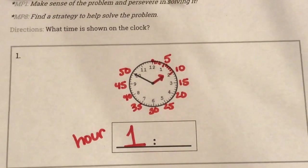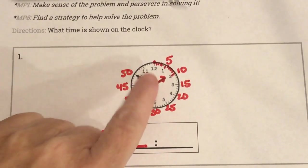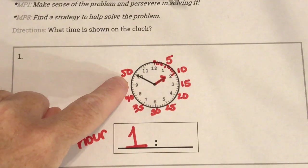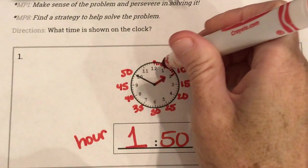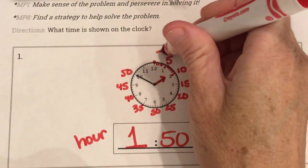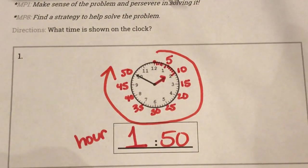So my minute hand or my long hand is pointing to the 50 and that's because this hand started here and it moved like this. We call that clockwise direction.